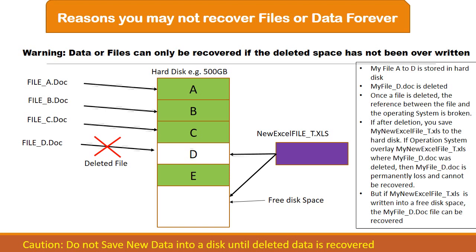Let's look at this mechanism and understand the reasons you may not be able to recover your files. For example, here I have a 500-gigabyte hard disk. A hard disk is divided into compartments — small storage spaces. File A is stored in compartment A, File B in compartment B, File C in location C. File D was deleted, and what the operating system does is declare that space free.